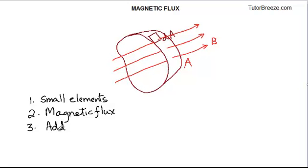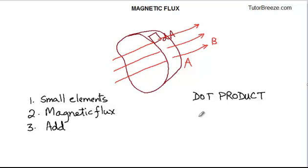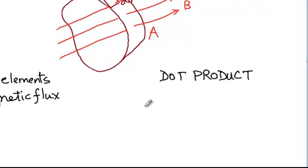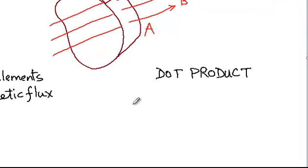At this point you may need to review the dot product of vectors in case you are not familiar with it. One thing you need to look at is the dot product of vectors, and the other is the concept of an area as a vector.